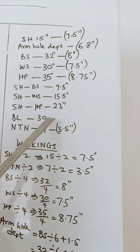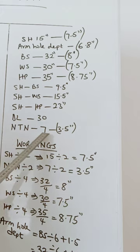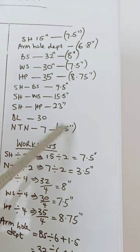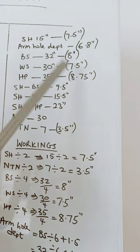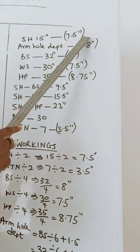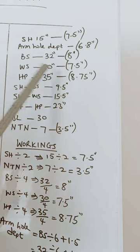The dress length is 30, our nipple to hip is 16.5, our nipple-to-nipple measurement is 7. The specimen is 2. All these measurements are in inches.